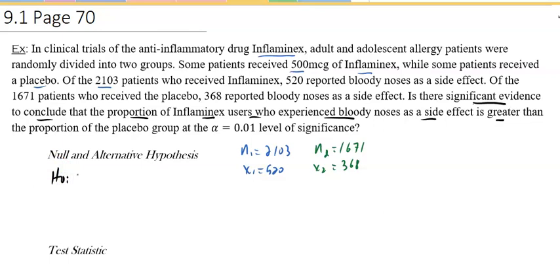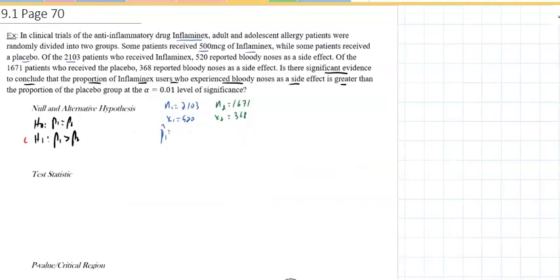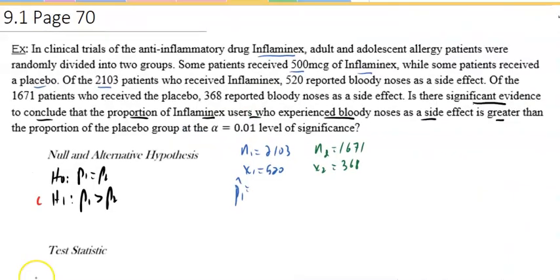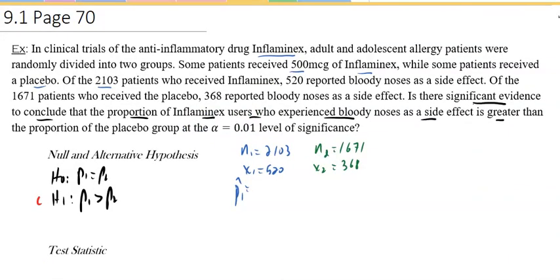The null hypothesis will claim those proportions are the same, no difference. The alternative claim is that one is bigger than the other. If I work out the numbers, p1-hat is 520 divided by 2,103. You could approximate it to three decimal places, 0.247. q1-hat will be 1 minus that, which is 0.753.